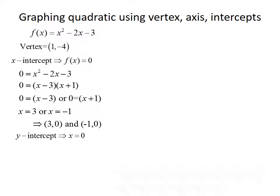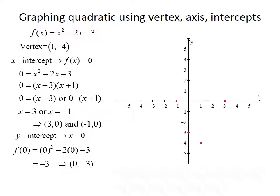To find the y intercept, set x equal to 0: f of 0 equals 0 squared minus 2 times 0 minus 3, which simplifies to negative 3. So the y intercept is the point 0, negative 3. We can plot the vertex, x intercepts, and y intercept on a set of axes, then connect those dots to sketch the parabola of f of x equals x squared minus 2x minus 3.